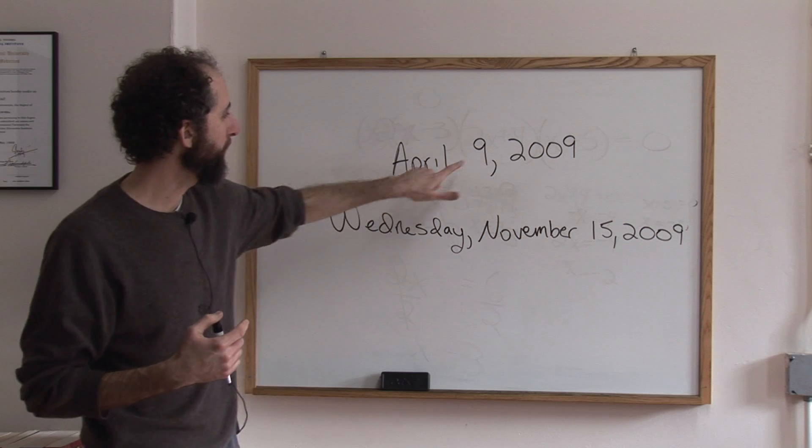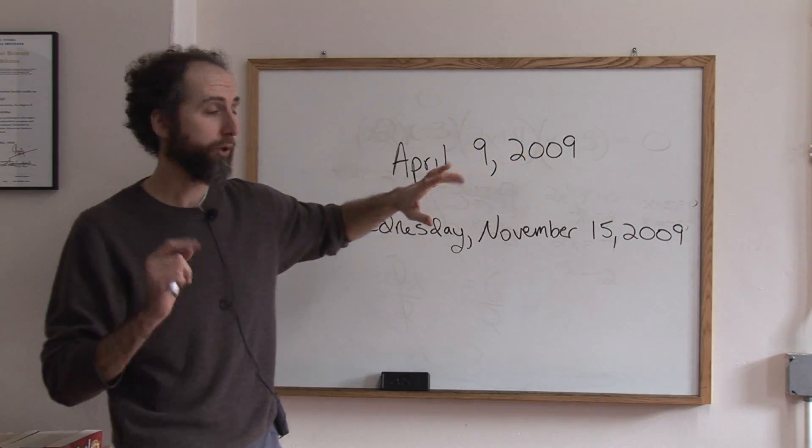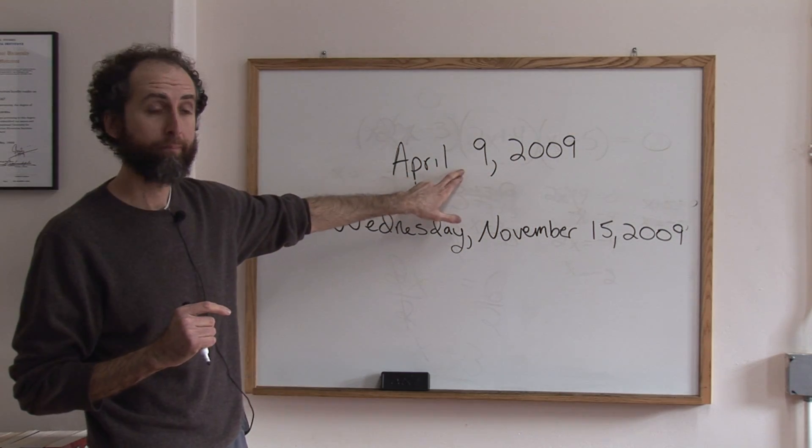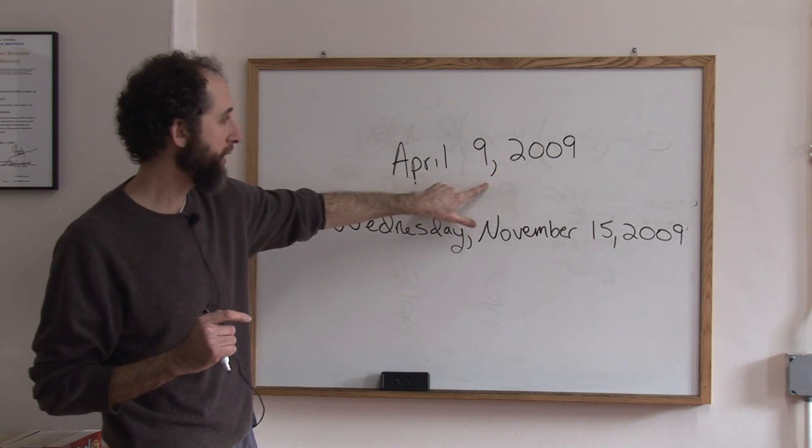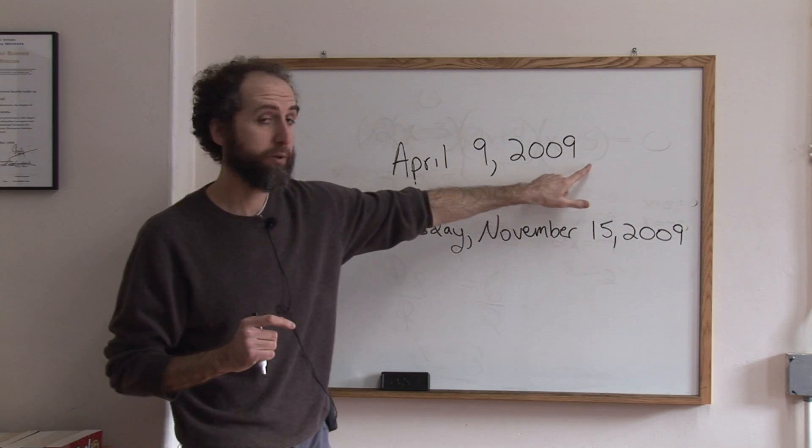So here's an example of the date, April 9th, 2009. So you're going to write April, no comma, space though, there's a space right here, then 9, then the comma, then a space, and then 2009.